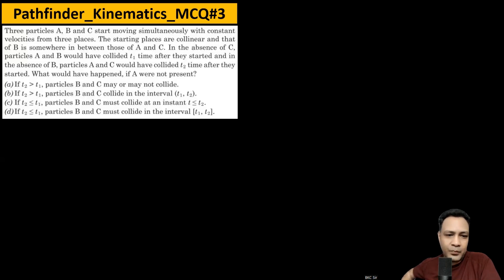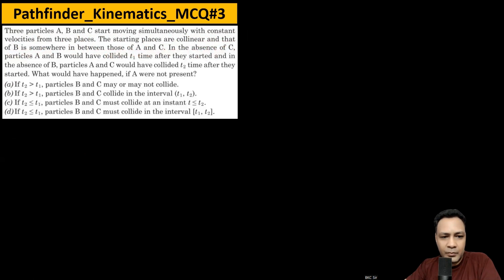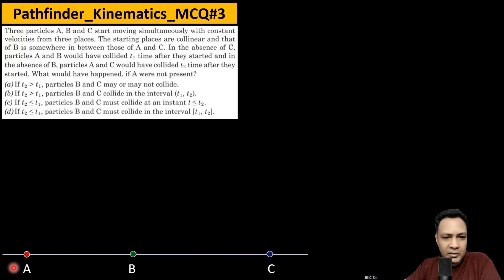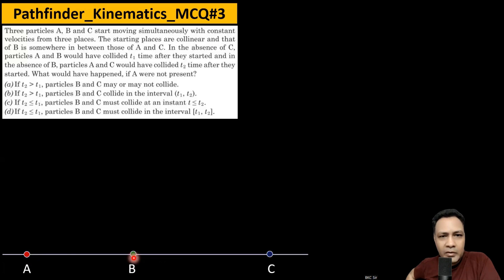The question states that three particles A, B, and C start moving simultaneously with constant velocities from three places. The starting places are collinear, with B somewhere in between A and C. So initially, A, B, and C are on a line, with B between A and C. Constant velocities mean their directions of motion remain constant.